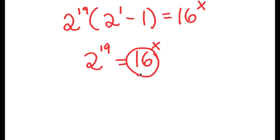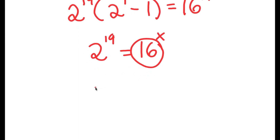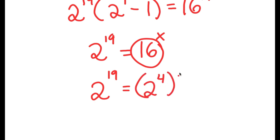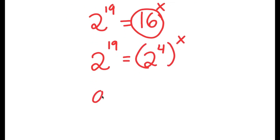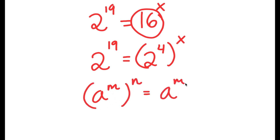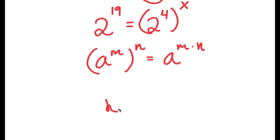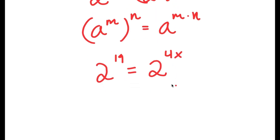Now, 16 is the same thing as 2 to the power of 4. So now I have 2 to the power of 19 is equal to 2 to the power of 4 to the power of x. And if I have something in the form a to the power of m to the power of n, this is equal to a to the power of m times n. So 2 to the power of 4 to the power of x equals 2 to the power of 4x.